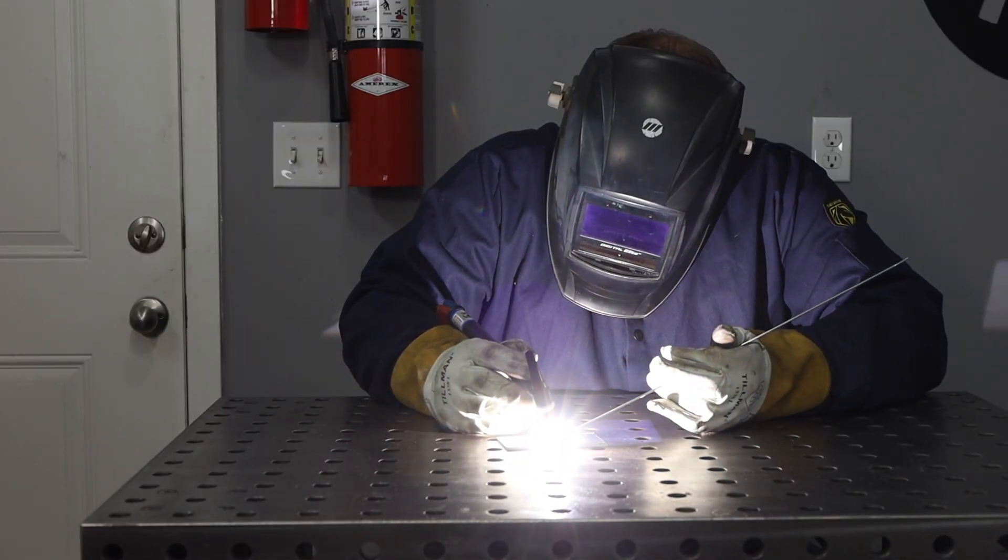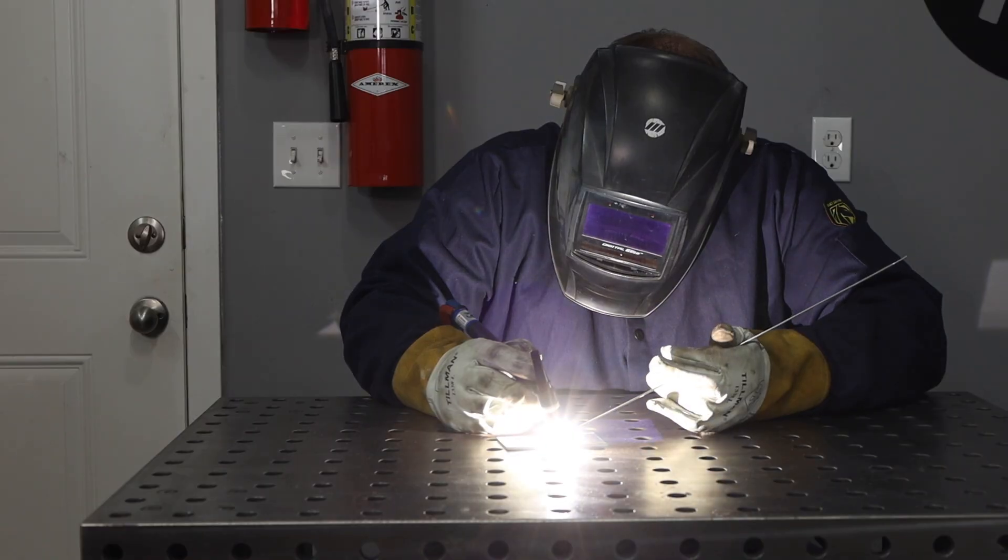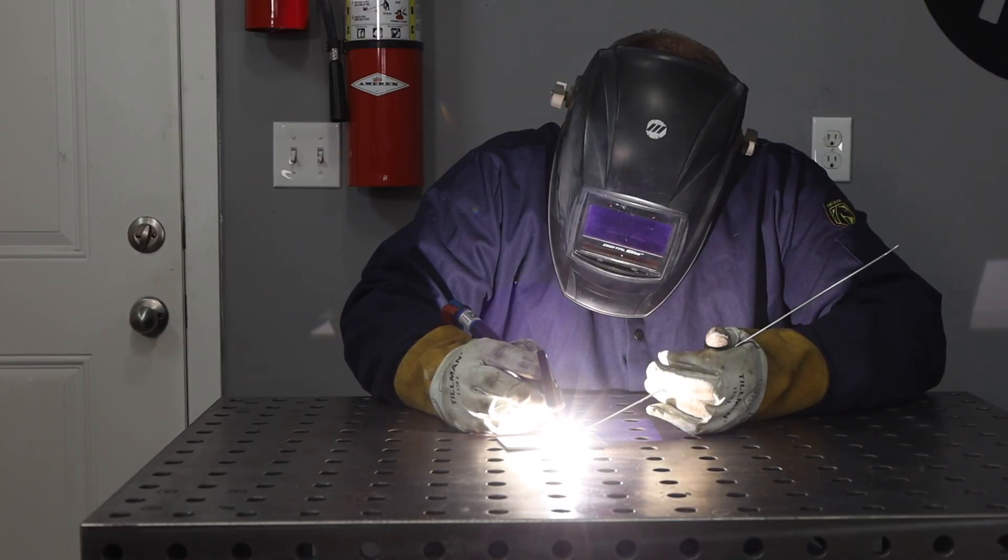When you TIG weld aluminum, we actually use an alternating current and this etches the surface off of the aluminum. So notice there's a frosty layer right around the outside of the weld.